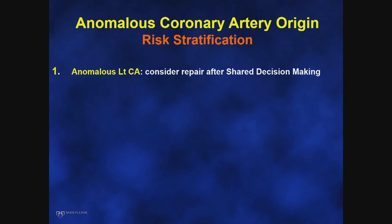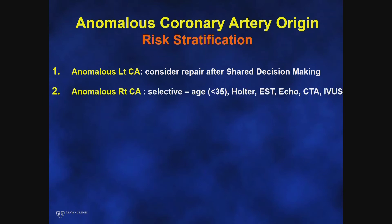Regarding risk stratification for anomalous coronary artery origin: for anomalous left from the pulmonary artery or from the right coronary sinus, surgical repair should be considered after shared decision-making with the patient. For anomalous right — which is six times more common than anomalous left — you must be more selective. Age matters; data suggests patients under 35 are more commonly affected by exercise-related sudden death from coronary anomalies, while in older patients, obstructive coronary artery disease is the more common etiology. Exercise stress testing and Holter monitoring are useful if positive, but a negative result does not rule out risk.